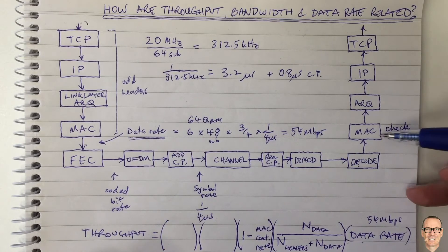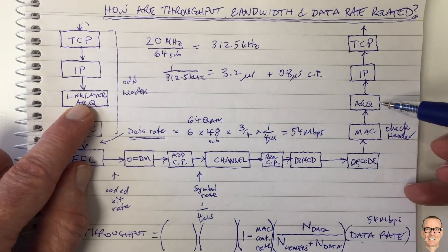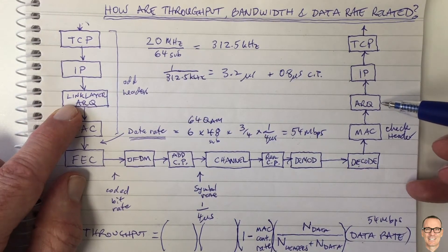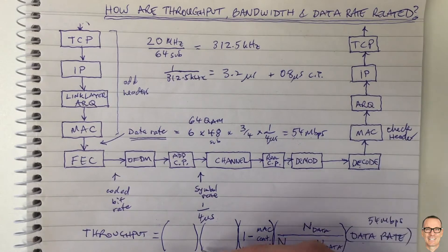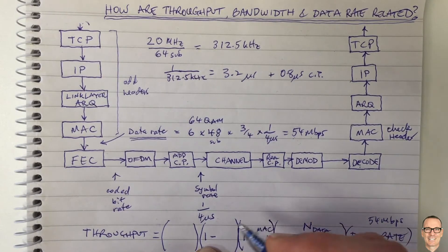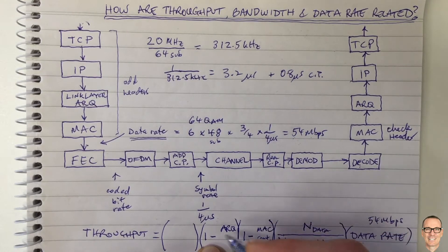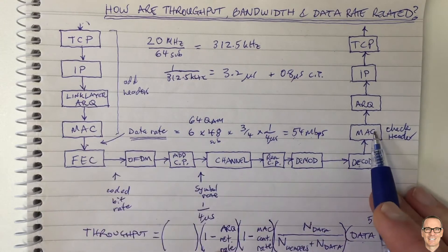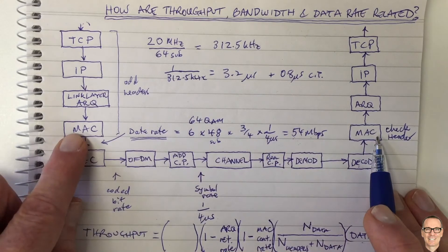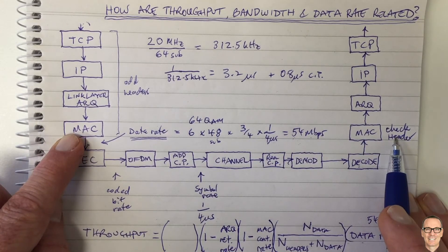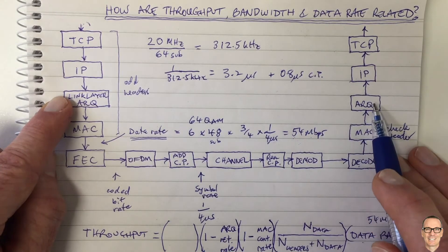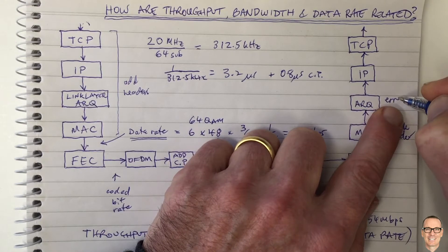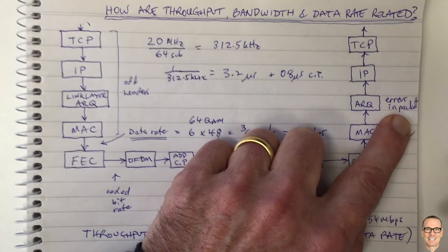There's another factor at the ARQ layer. If the header is fine, the packet is passed up to the ARQ, which checks whether the forward error correction matches so that all the data is correct. We multiply by one minus the ARQ retransmission rate. If the packet is in error, the ARQ asks for it to be resent. This is caused by channel conditions — being far from the access point or having noise in the receiver — leaving uncorrected errors in the packet.